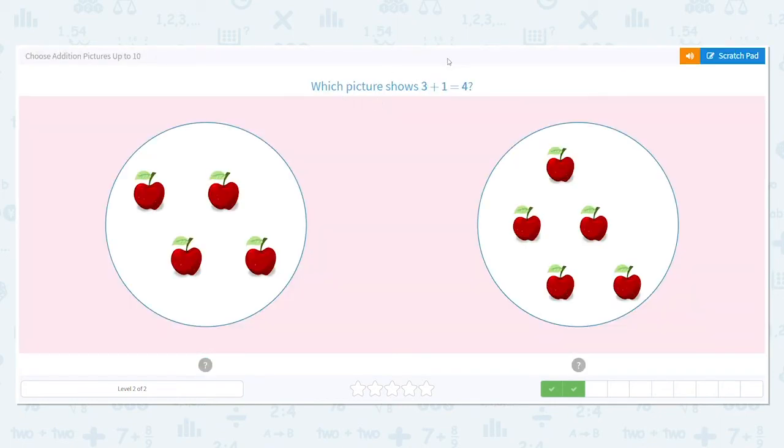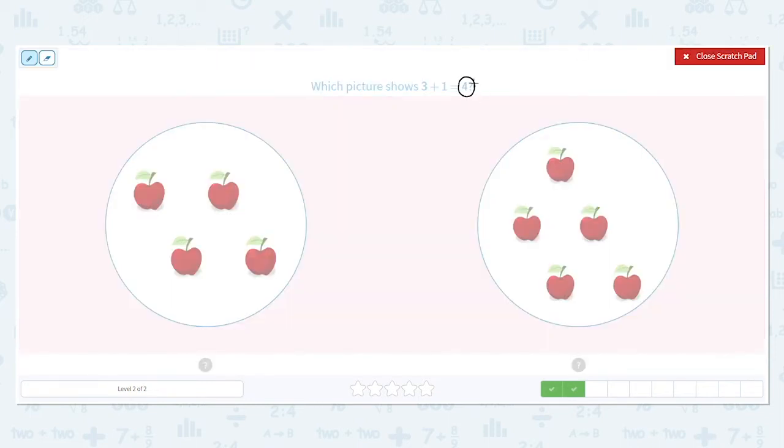Which picture shows 3 plus 1 equals 4? So what do we need to do? We need to look at each picture and count the total number. And that will tell us which answer is correct because we want the total number to be 4. Go ahead and count. How many are on the left? 4. Let's double check by counting the right. Go ahead and count. 5. So which is our answer? Which one shows 3 plus 1 equals 4? Good job.